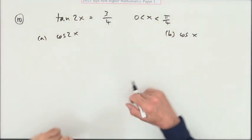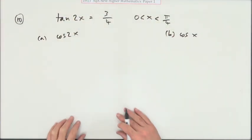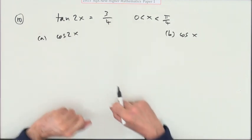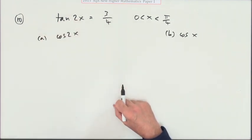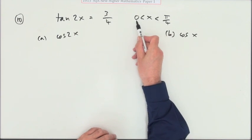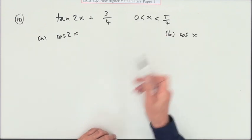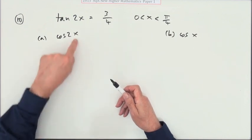Number 10 from Paper 1, 2015. Gives you this information: the tan of 2x is 3/4. Now x is just between 0 and π/4, so it's quite small. What's the value of cos 2x?